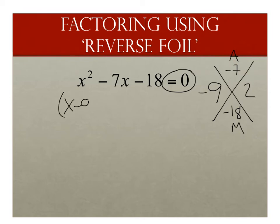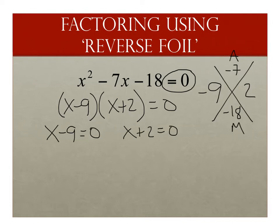So we get x minus 9, x plus 2. That equals 0. Now I can set each factor equal to 0. I get x minus 9 equals 0, x plus 2 equals 0. And I'm off with x equals 9 and x equals negative 2.